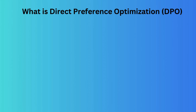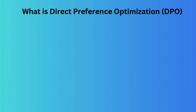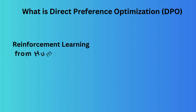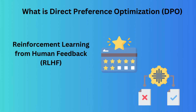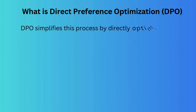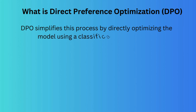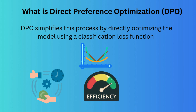What is direct preference optimization, DPO? DPO is a method for fine-tuning language models to align with human preferences, avoiding the complexity of reinforcement learning. Traditional methods like reinforcement learning from human feedback, RLHF, require training a separate reward model and then using reinforcement learning, such as PPO, to optimize the model. In contrast, DPO simplifies this process by directly optimizing the model using a classification loss function, making training more stable, computationally efficient, and easier to implement.